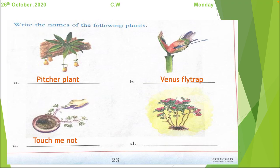C. There are some touching the plant and the leaves are getting close. So from the picture we can easily guess that it is touch me not plant.